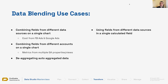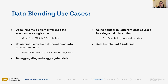We can also use data blending to bring different fields from different platforms and use those fields in a calculated field. Previously in data modeling, we saw that we can have calculated fields and perform mathematical functions over different numbers and metrics, but they were all in the same data source. Now we want to do it from fields in different data sources — for example, to calculate conversion rates or things that rely on metrics coming from different sources.